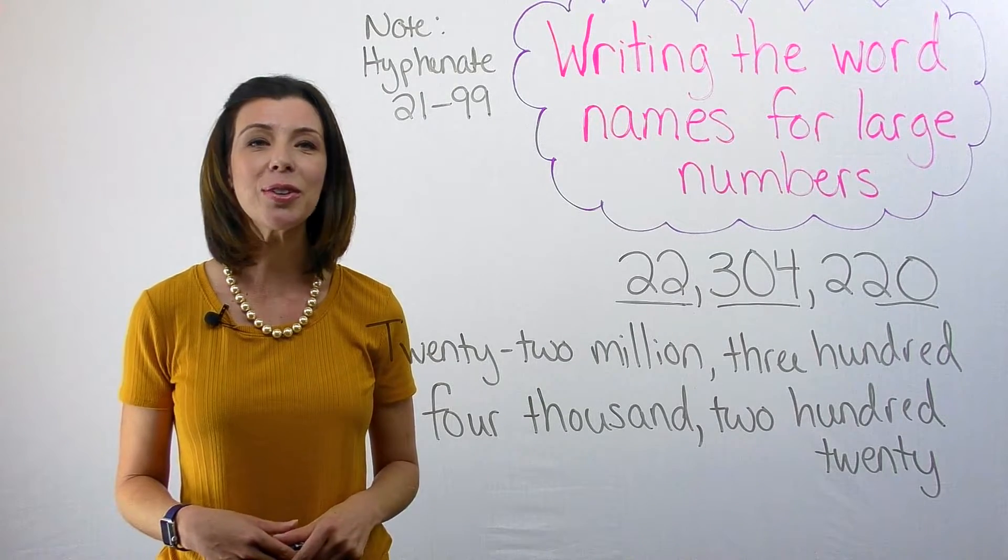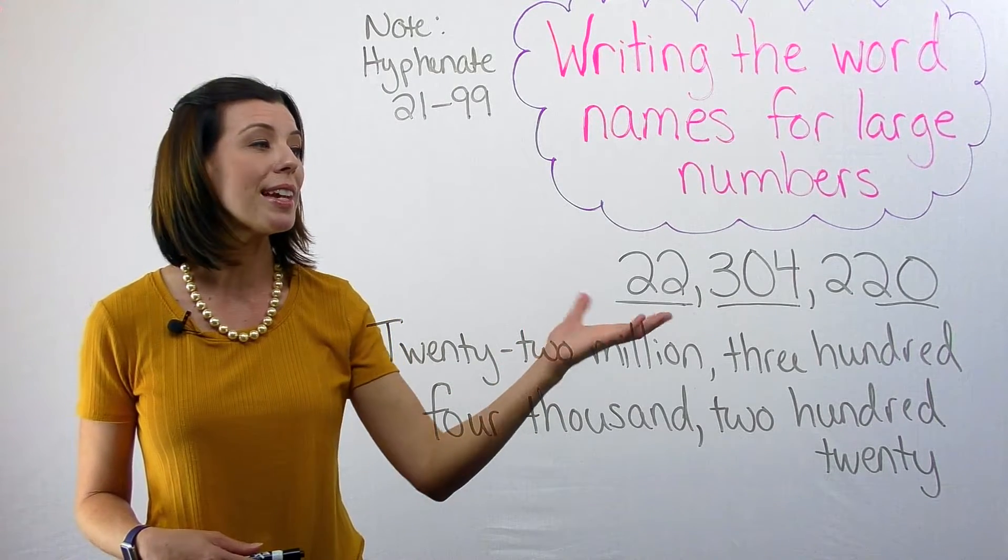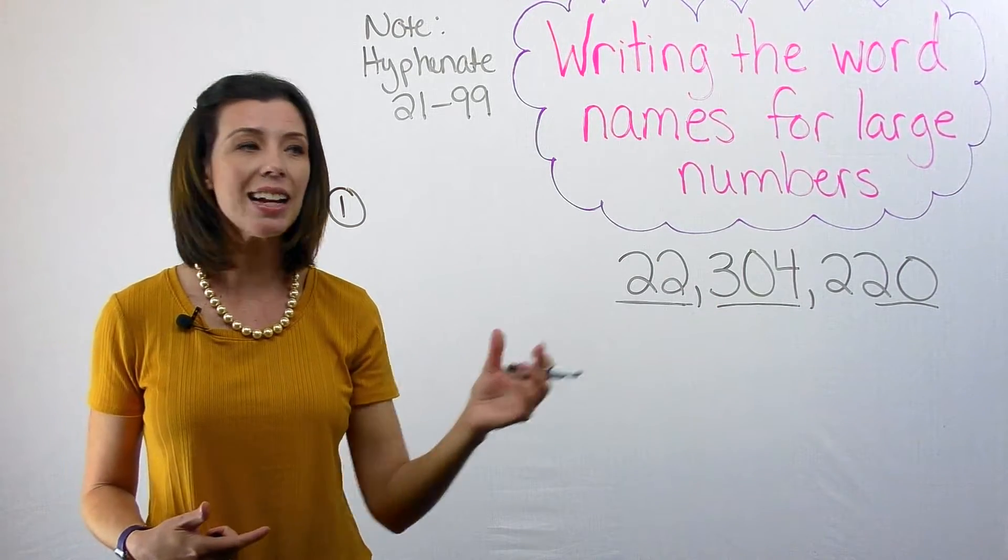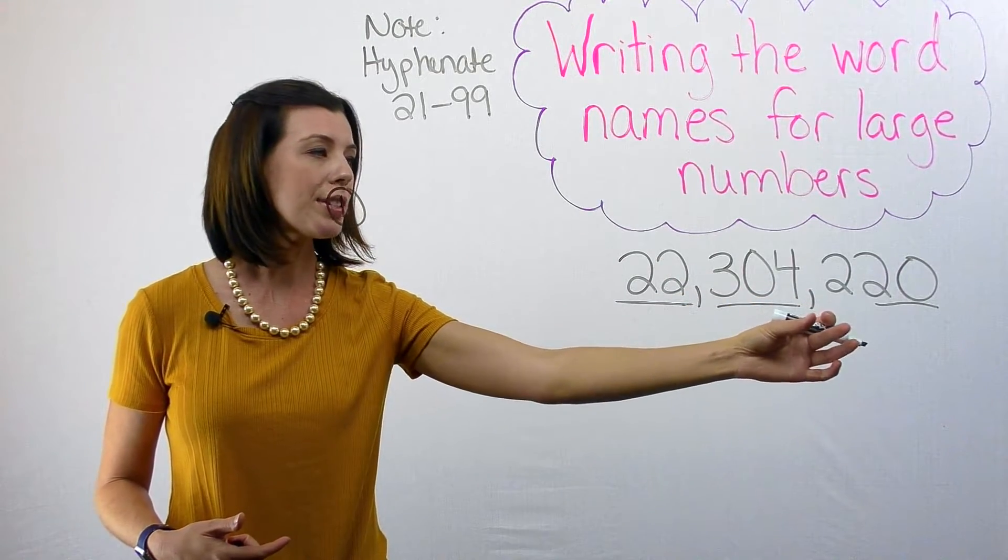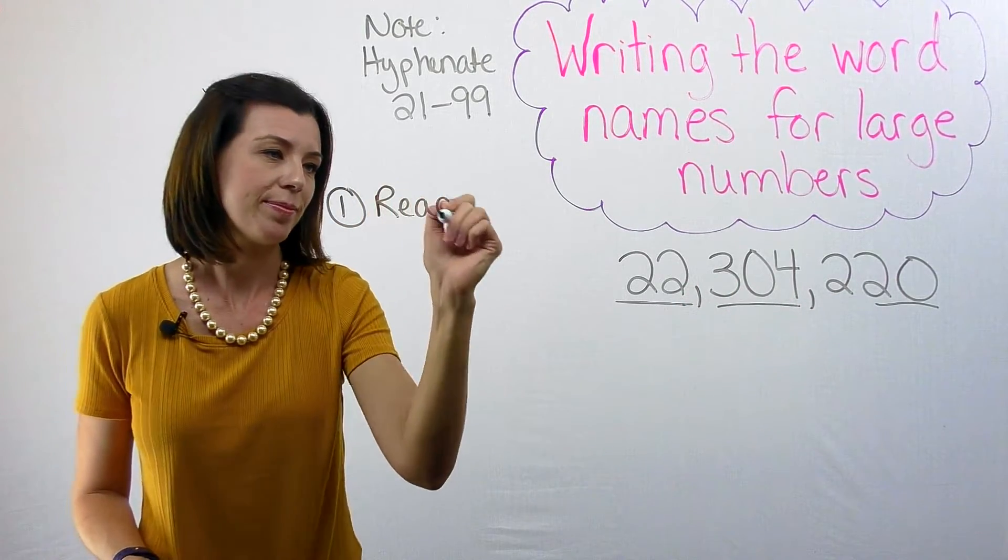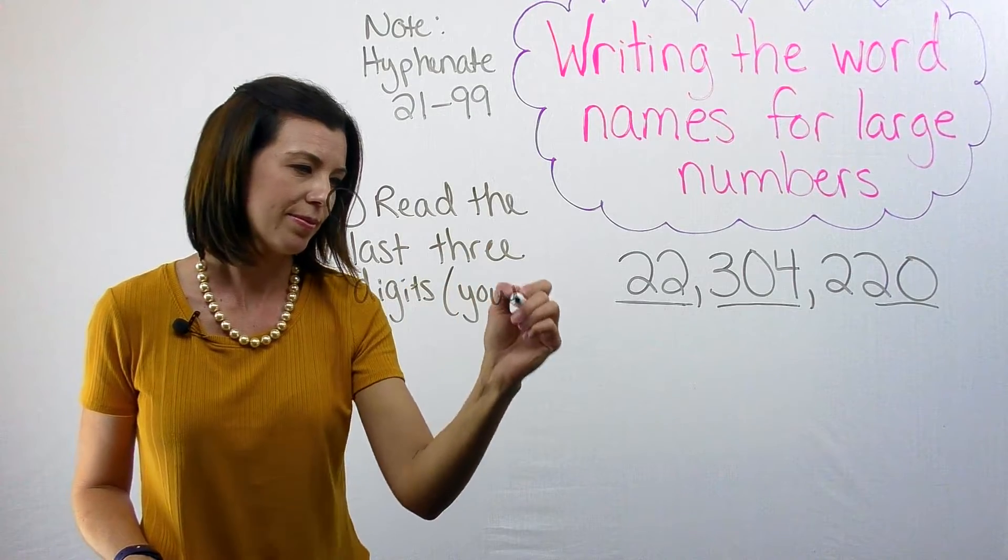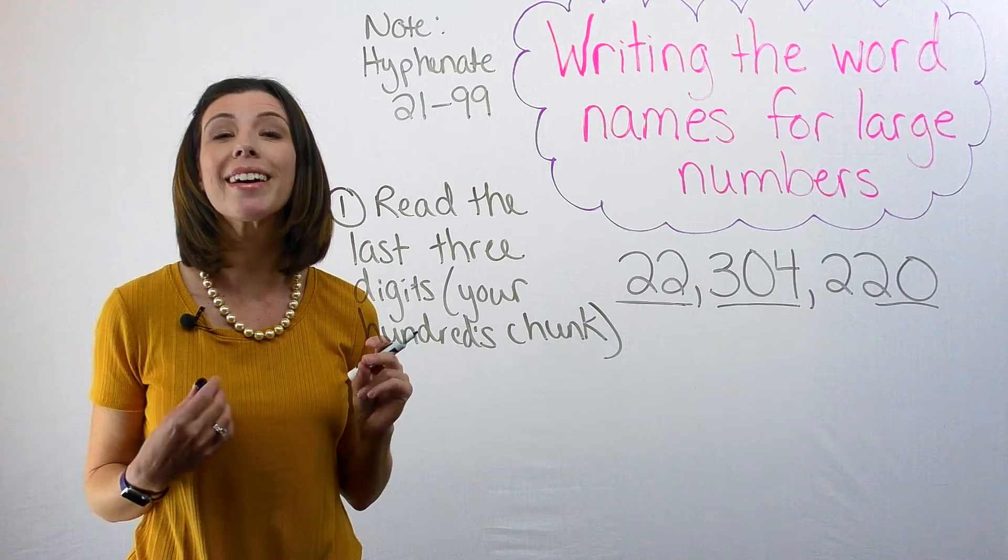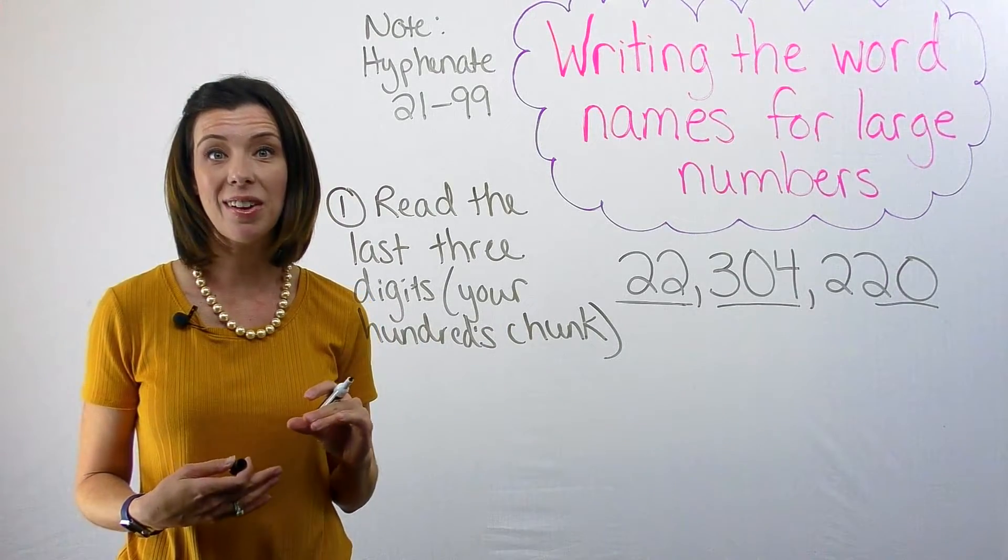So as a final review, let's list our steps for how we take a large number and put it into words. So step one is we want to read our last three digits. And you might even think of this as reading the last two first. Remember, the next thing I did was I made sure to put a comma in if I'm going to go into the thousands.